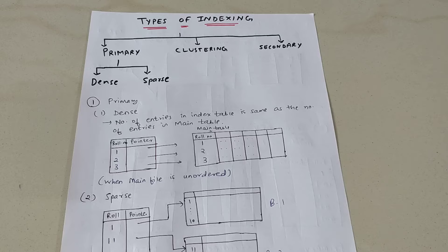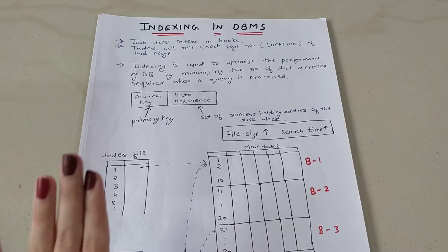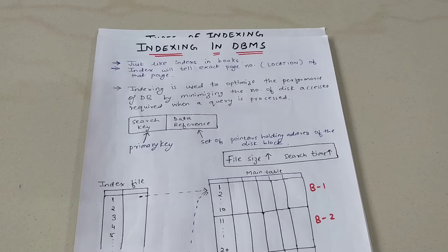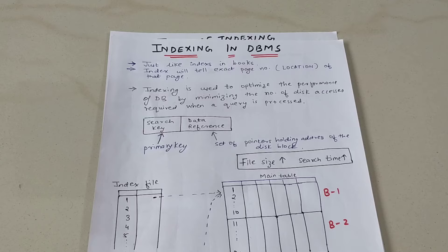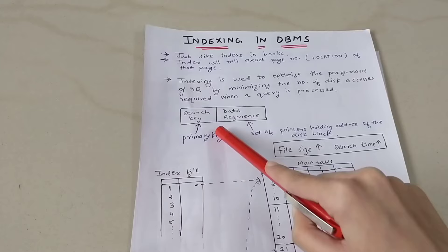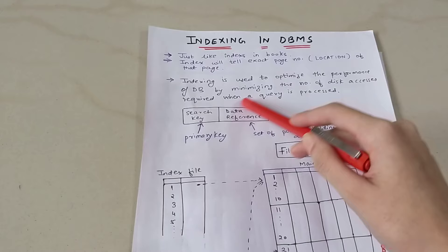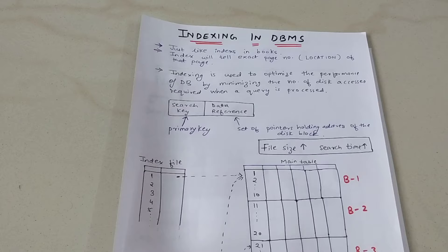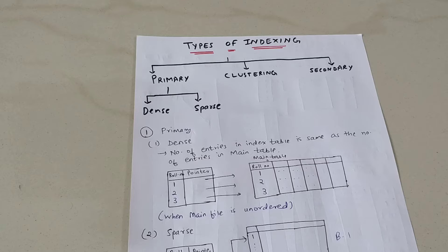Hello everyone, welcome back to my channel. In this video I'm going to study about types of indexing. I've already made a video on indexing in DBMS — if you haven't checked it out, I'd suggest watching that first. In short, indexing is used to optimize the performance of a database by minimizing the number of disk accesses required when a query is processed. When you have a huge main table and want to reduce the time to access a particular record, we use index files. The structure of an index file has a search key — basically a primary key — and a second field called data reference, which is a pointer pointing to that particular block.